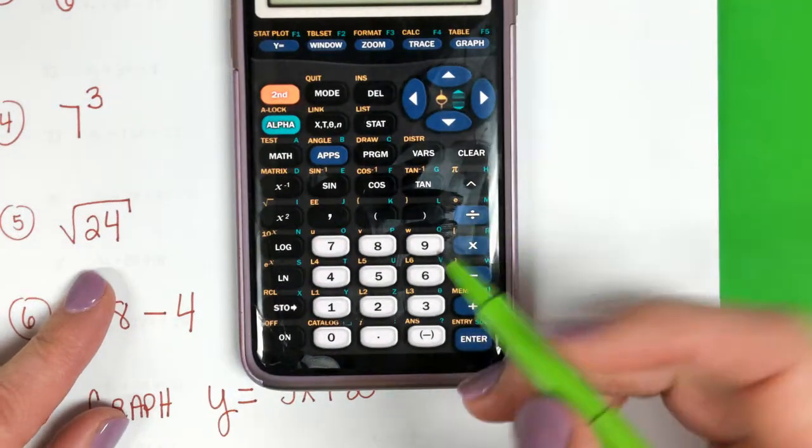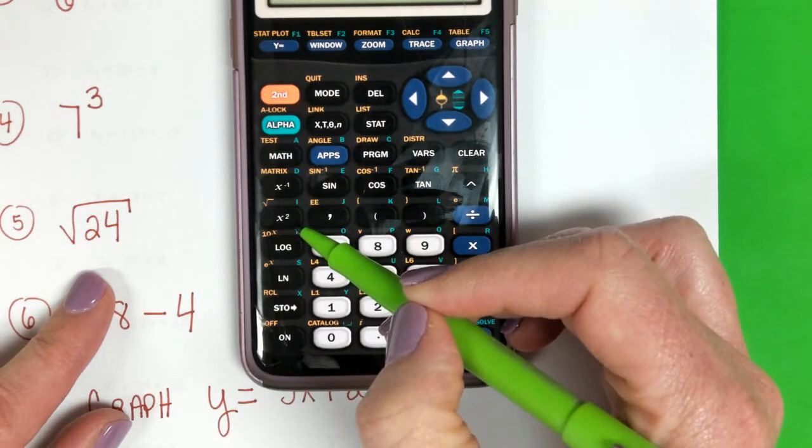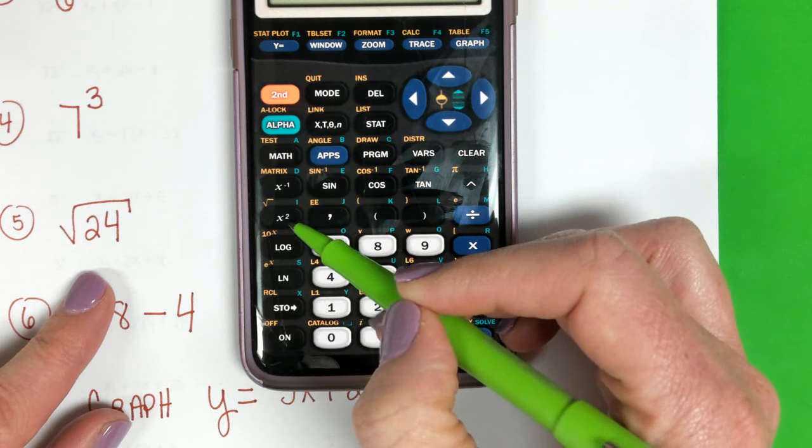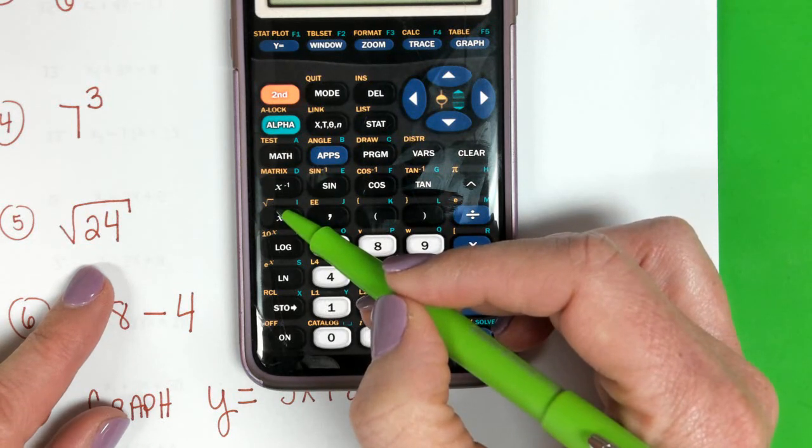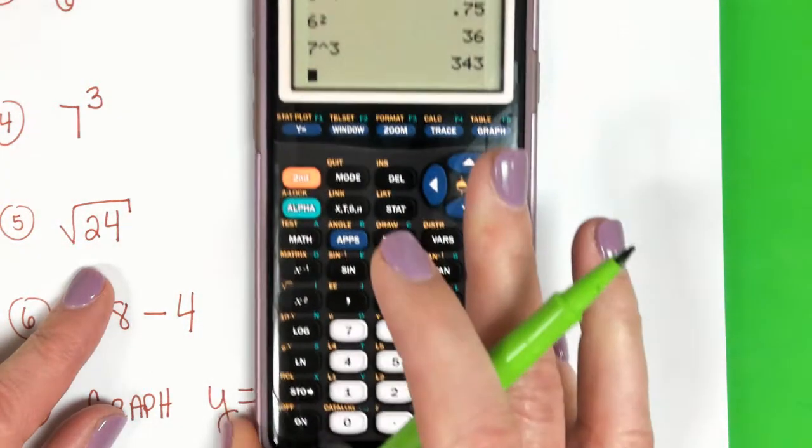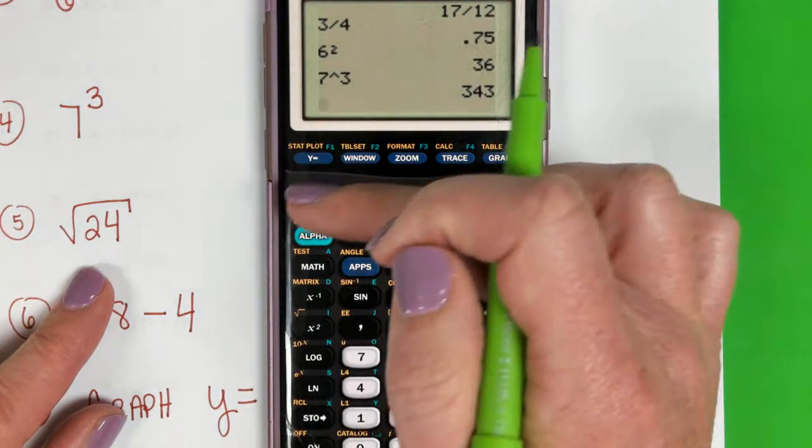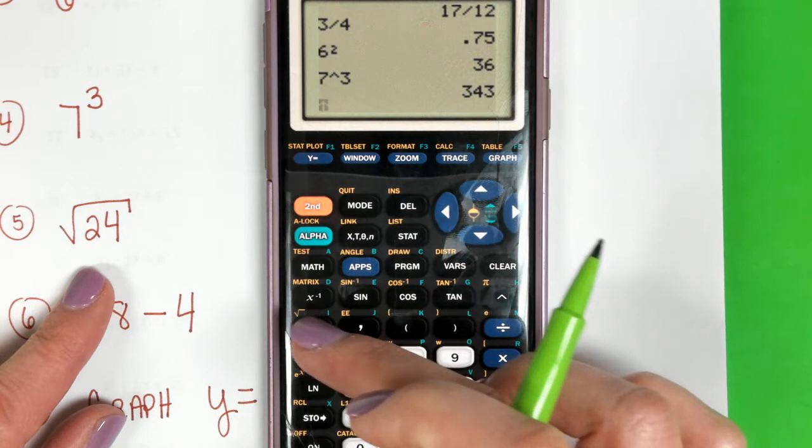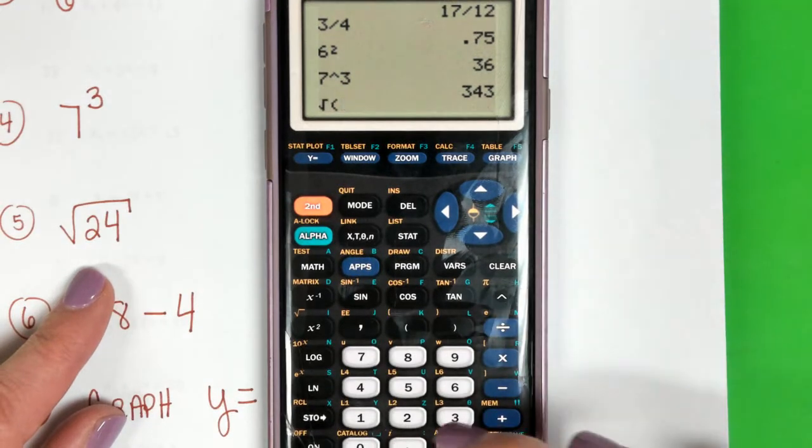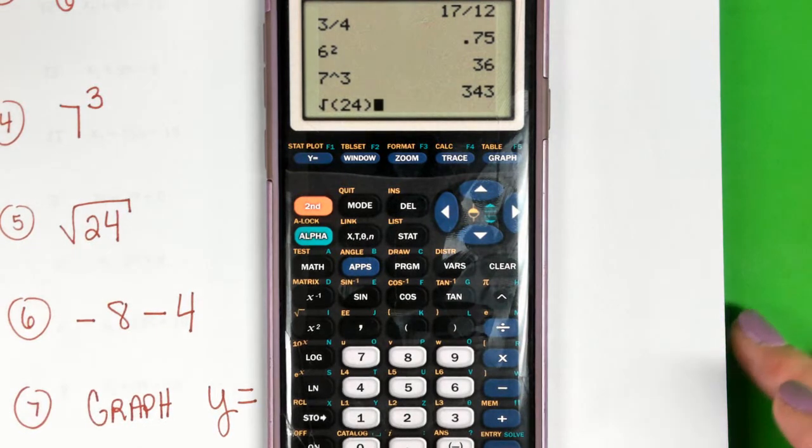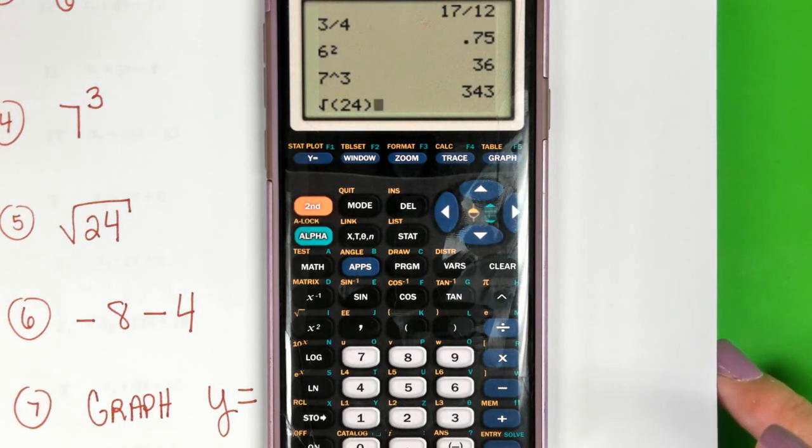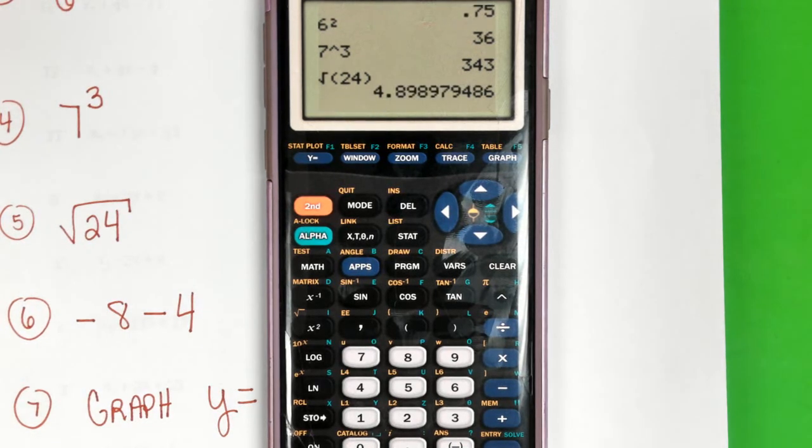Okay, square roots—those are really important. So do you see here above the x² key in yellow is the square root sign? So if I wanted to do the square root of 24, I have to press second and then the x² key, and then I can type in 24. You can close your parentheses—it doesn't hurt to go ahead and do that so that we know only 24 is under the square root sign. And then it will give you the answer.